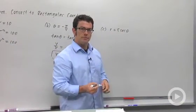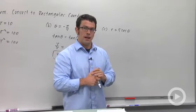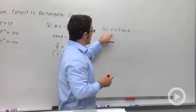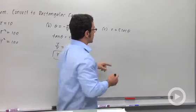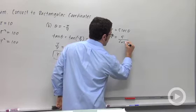r equals 5 secant theta. Well, I know that r cosine theta is x, and I can get r cosine theta together if I multiply both sides by cosine. Remember that secant is 1 over cosine theta.